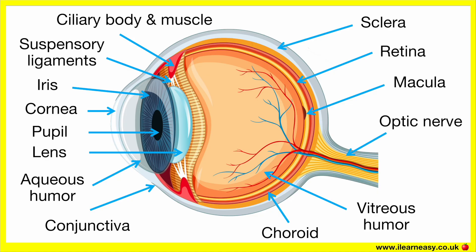Optic nerve. The optic nerve is a thick nerve connected to the back of the eye. It carries visual signals from the retina to the brain, which then processes the images and lets you see. There are no photoreceptors in the part where the optic nerve leaves the retina — therefore this part cannot detect light, and this small area is known as the blind spot.